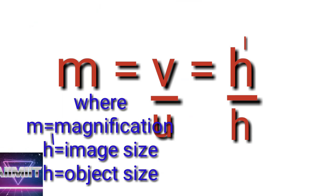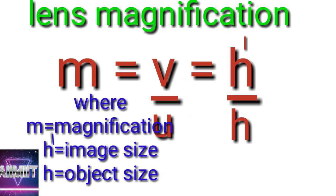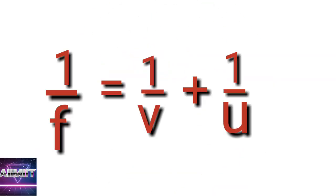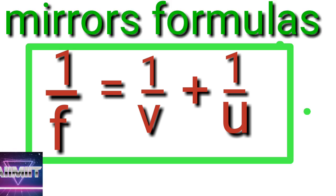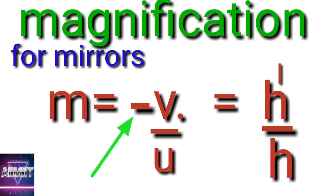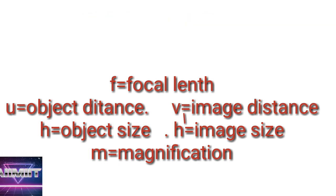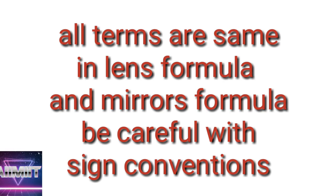Mirror formula: 1/f = 1/v + 1/u. Magnification for mirrors is m = -v/u or h'/h. Here f is focal length, v is image distance, u is object distance, h' is image size, and h is object size, same as lens formula only.